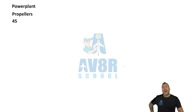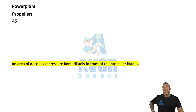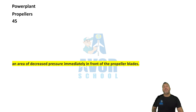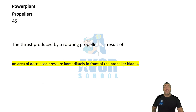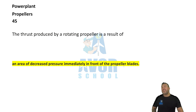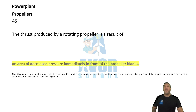Number 45. An area of decreased pressure immediately in front of the propeller blades.